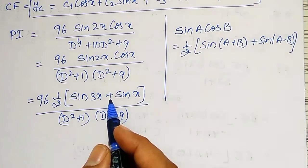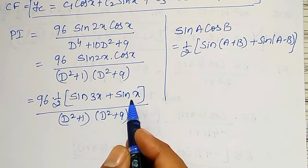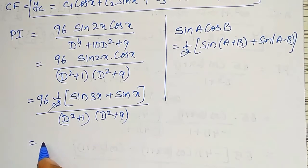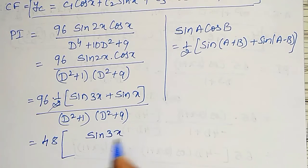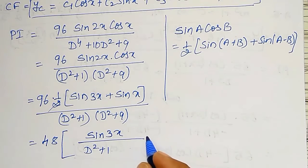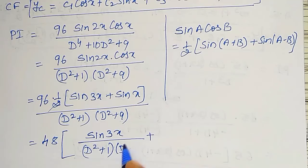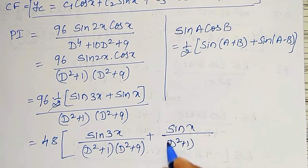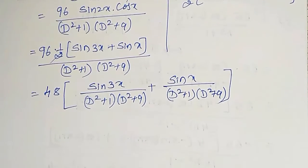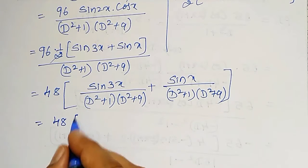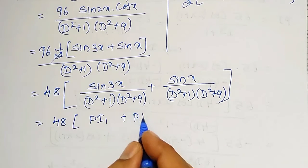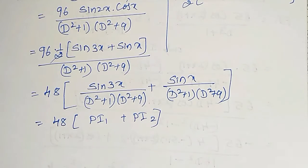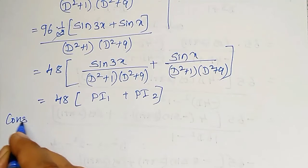Since we have a sum of two trigonometric terms, I can split into two parts. PI equals 48 times the bracket: sin 3x divided by d squared plus 1 into d squared plus 9, plus sin x divided by d squared plus 1 into d squared plus 9. I will call these PI1 and PI2 and solve them separately.